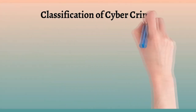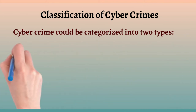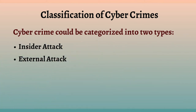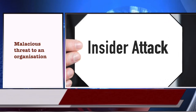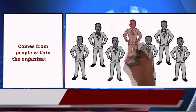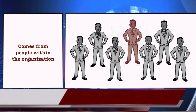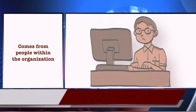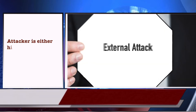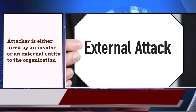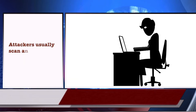Let us now classify cybercrimes. The cybercriminal could be internal or external to the organizations facing the cyber attack. Based on this fact, cybercrime could be categorized into two types: insider attack and external attack. An insider threat is a malicious threat to an organization that comes from people within the organization such as employees, former employees, contractors, or business associates who have inside information concerning the organization's security practices, data, and computer systems. When the attacker is either hired by an insider or is an external entity to the organization, it is known as an external attack. Since the attacker is external, these attackers usually scan and gather information.